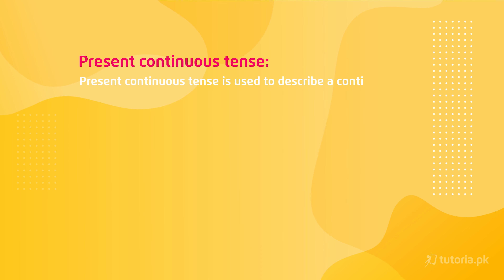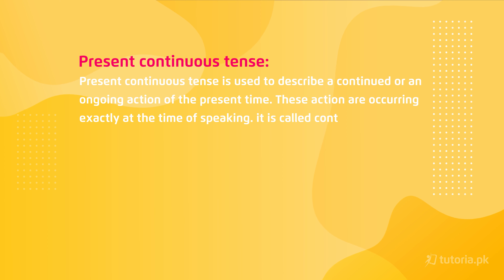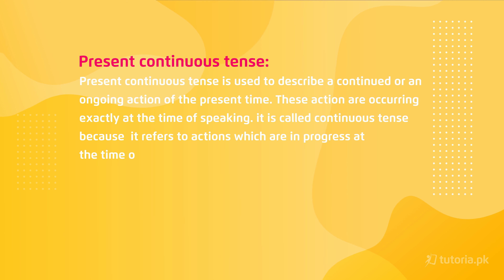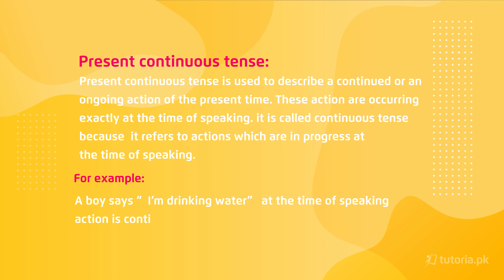Students, we are doing present tense. Now let's move towards the second type of present tense, that is present continuous tense. Present continuous tense is used to describe a continued or an ongoing action of the present. These actions are occurring exactly at the time of speaking. It is called continuous because it refers to an action which is currently in progress at the time of speaking.